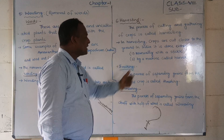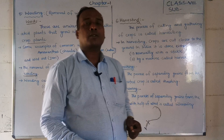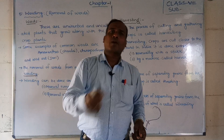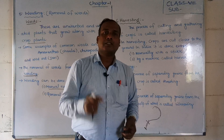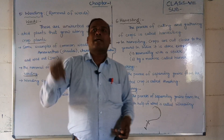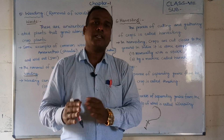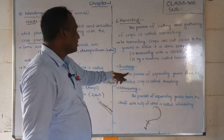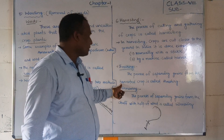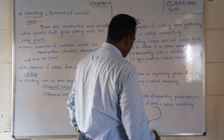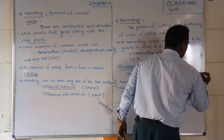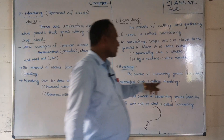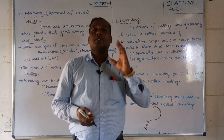Next is threshing. After harvesting and cutting the crops, we need to remove the grain from the stalks. This process is called threshing — by hammering or hitting the crops, the paddy or grains are separated. The process of separating grains from the stalks of the harvested crop is called threshing.